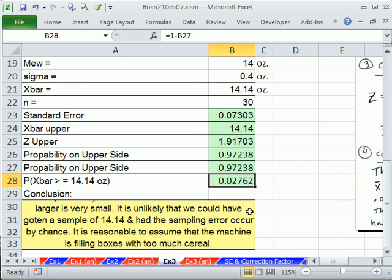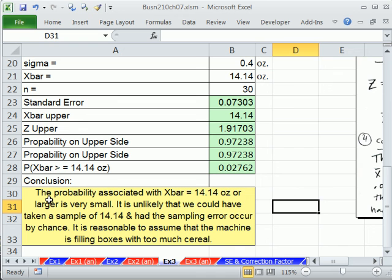So our conclusion, the probability associated with x bar 14.14 ounces, or larger, is very small. It is unlikely that we could have taken a sample of 14.14 and had the sampling error occur by chance. It is reasonable to assume that the machine is filling boxes with too much cereal.